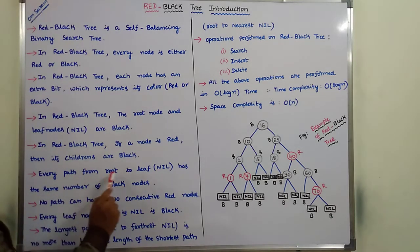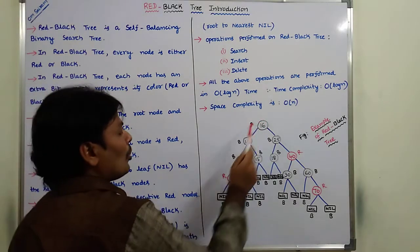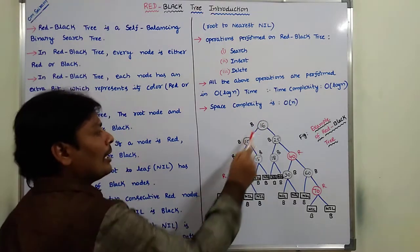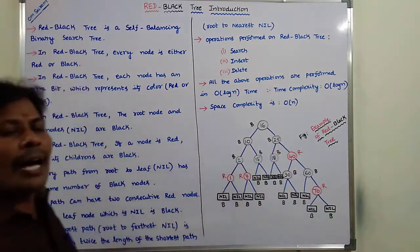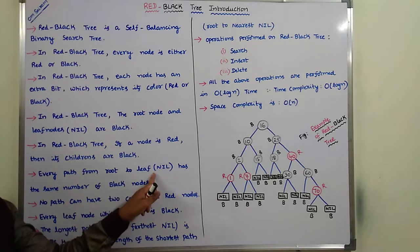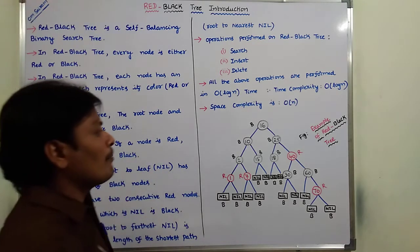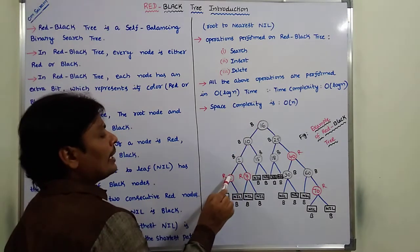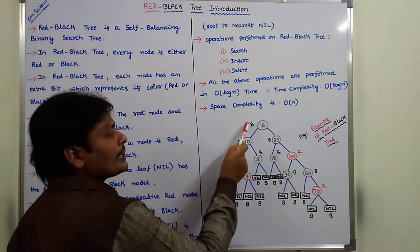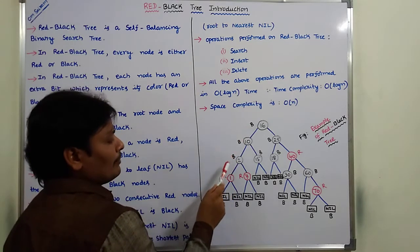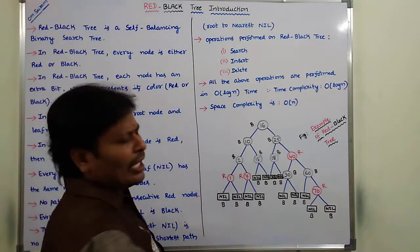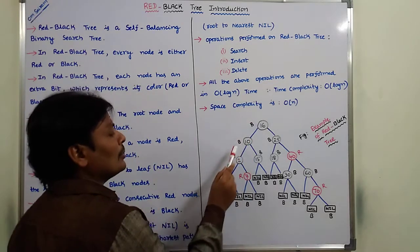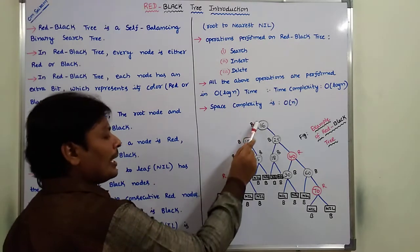Every path from root to nil has the same number of black nodes. Consider the path 16, 10, 2, 1, nil. Counting the black nodes (represented by B), there are 3 black nodes in this path, not counting the nil node at the end. Similarly, the next path also has 3 black nodes.